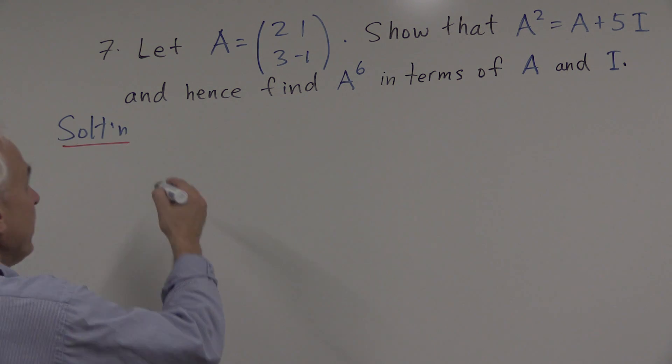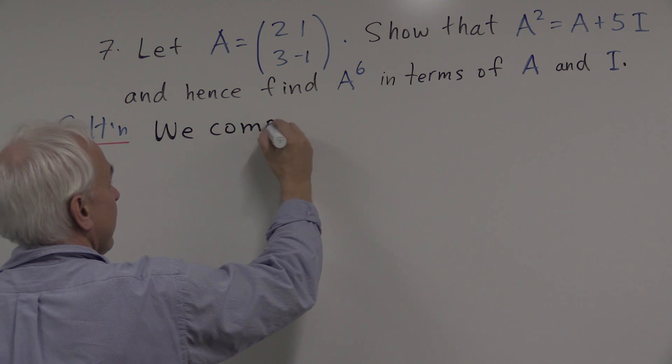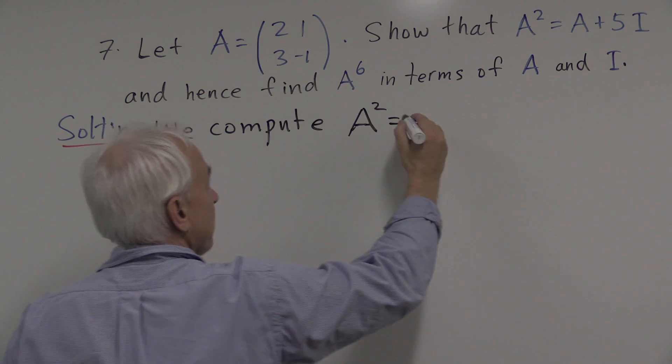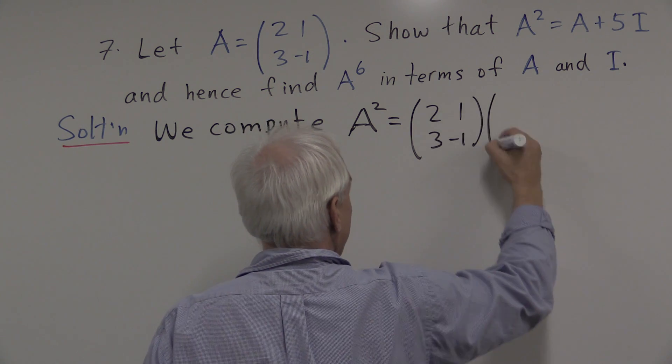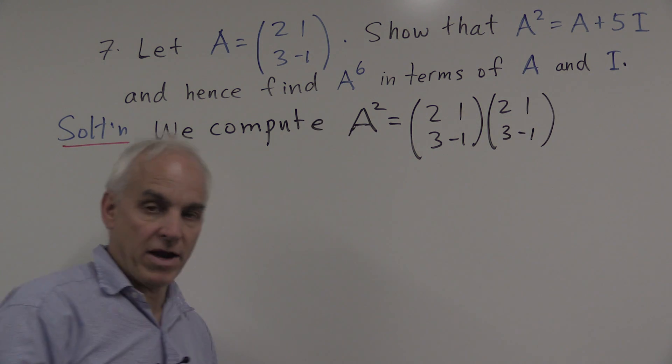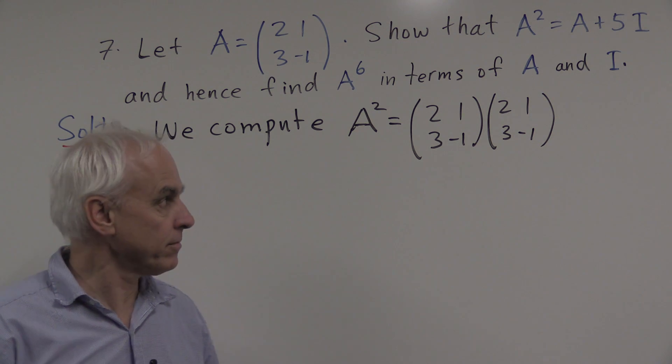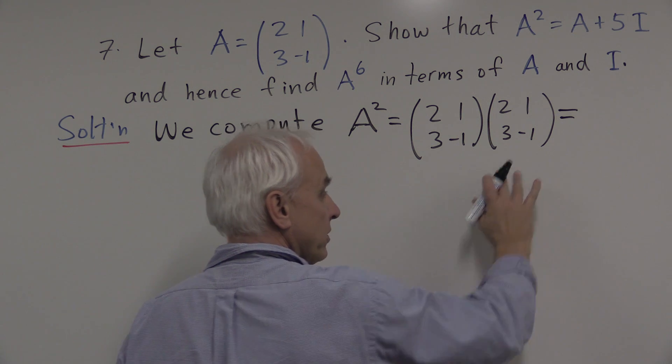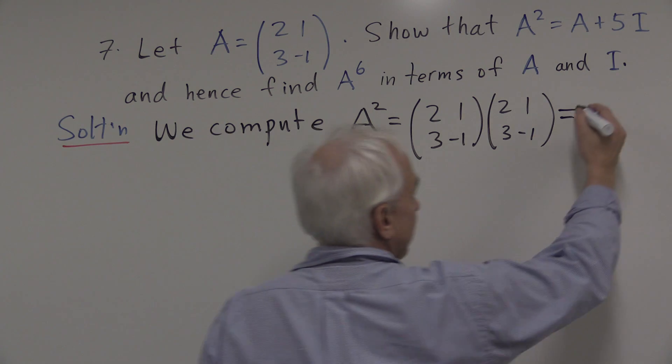So we compute A squared. What is A squared? Well, there's the matrix A. So we're going to write down A and we're going to write down A right beside it because we're squaring this matrix. It's good to have them written right in front of us to be able to do the matrix multiplication. This is a 2 by 2 times a 2 by 2. So we're going to get another 2 by 2.